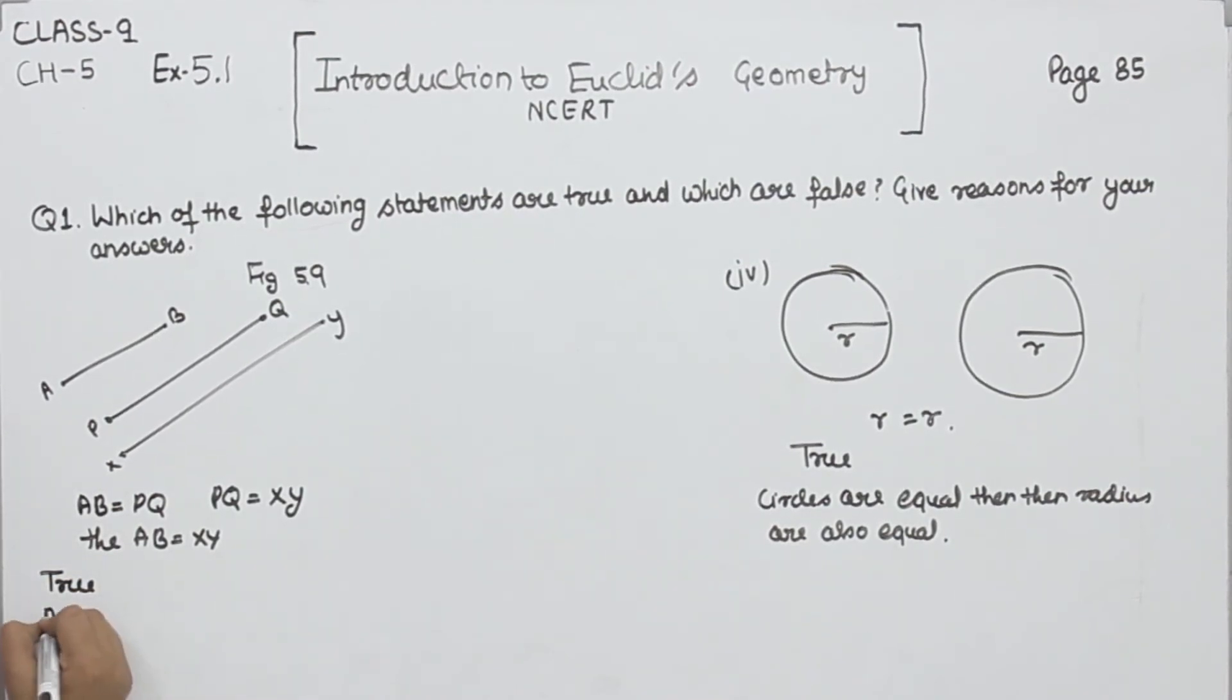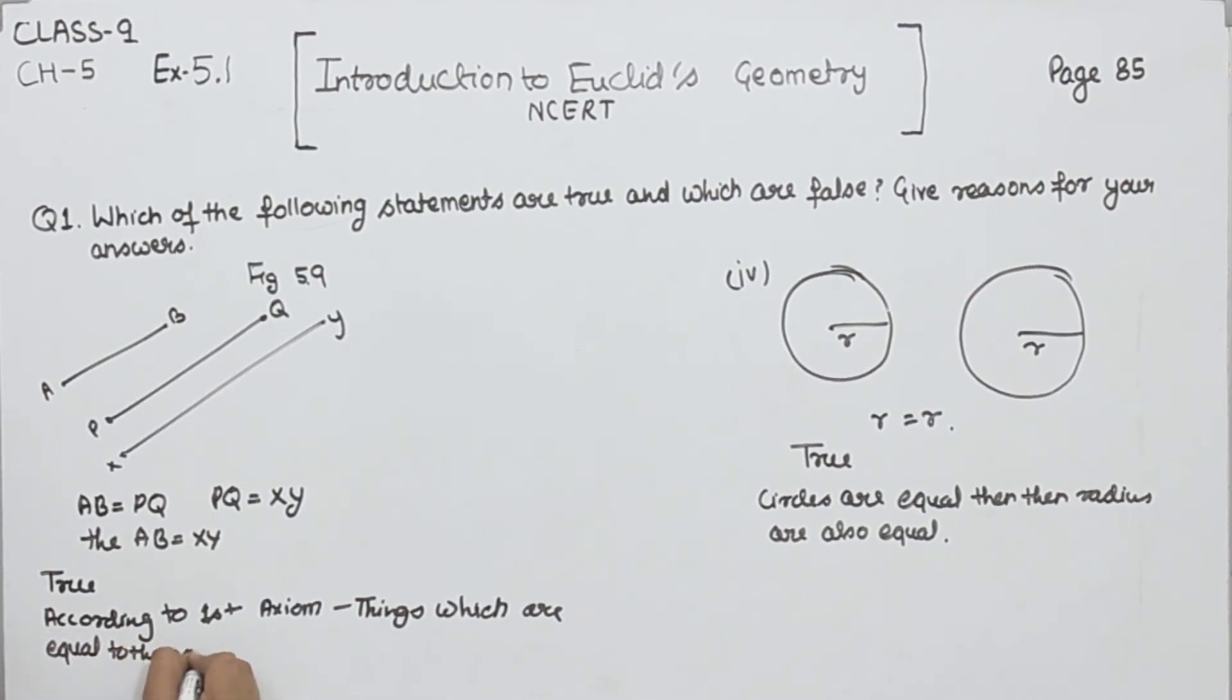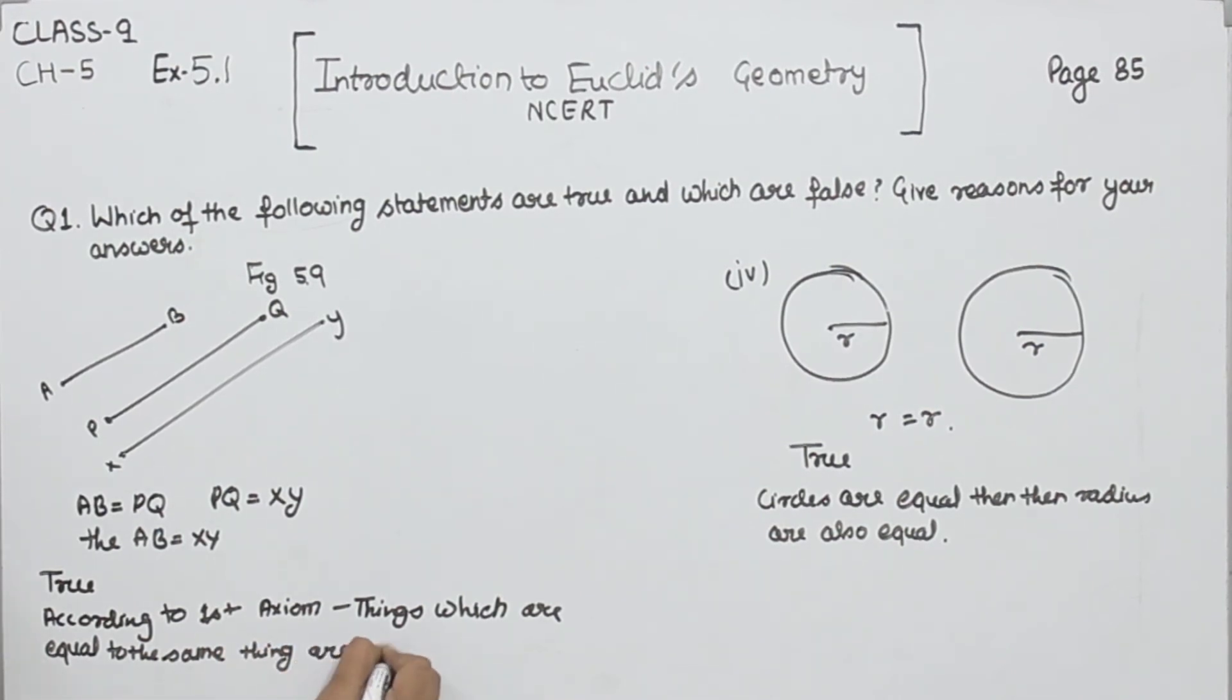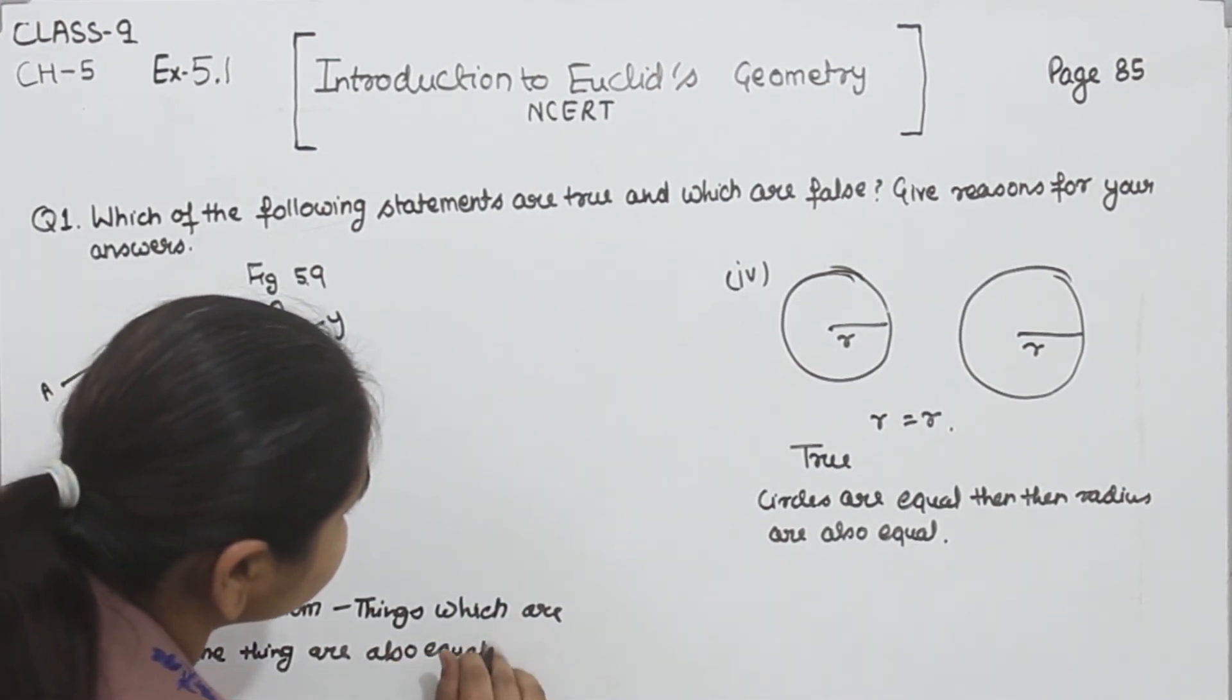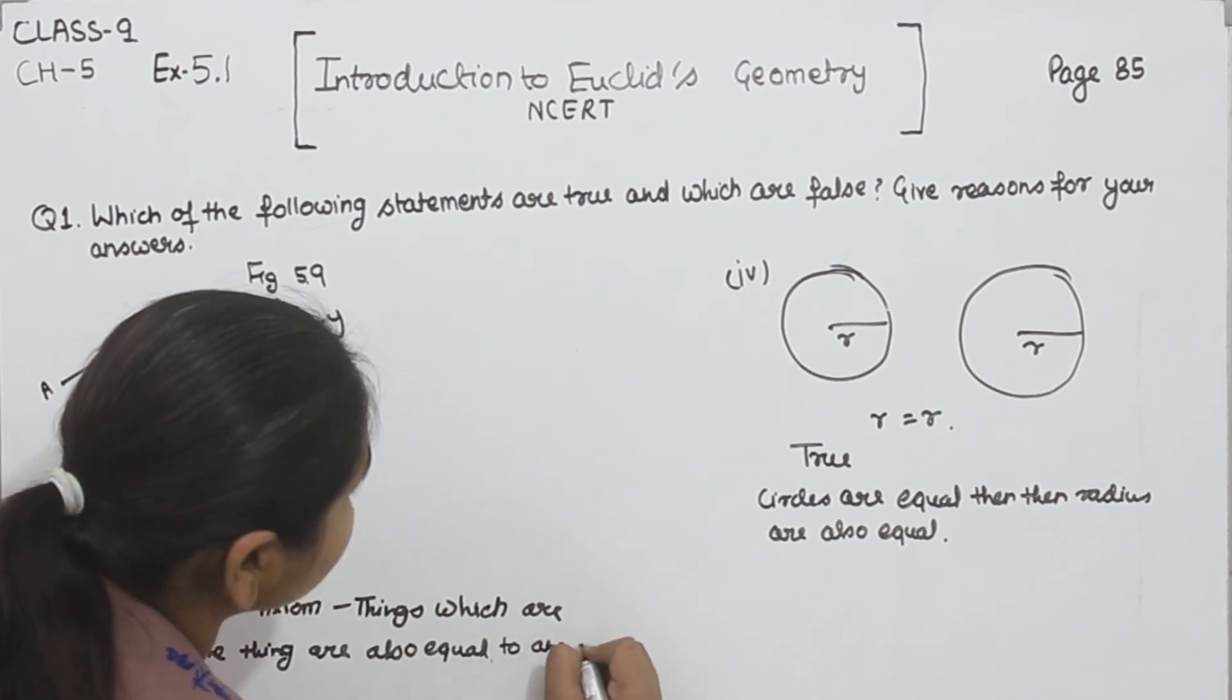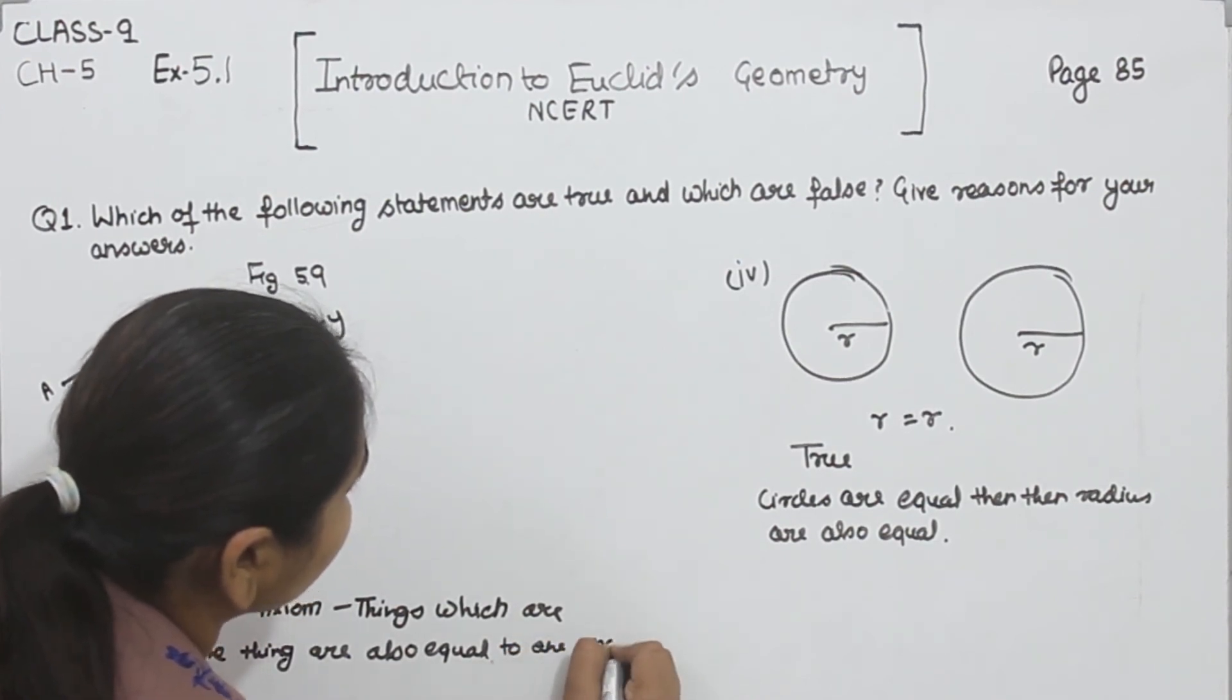We are going to write this statement. True according to first axiom: things which are equal to the same things are also equal to the same thing.